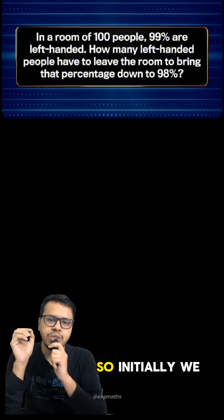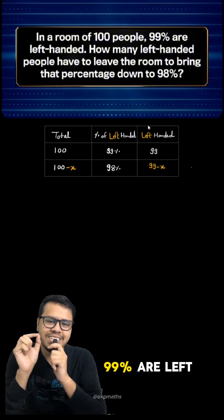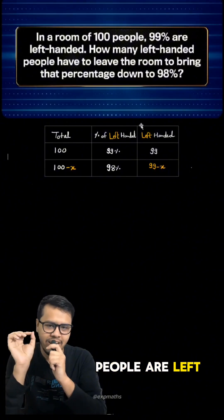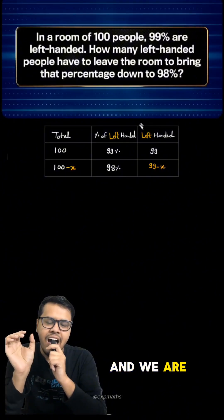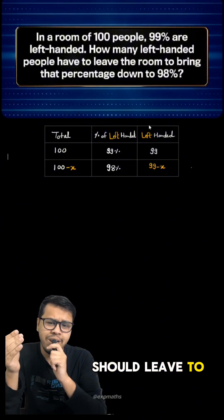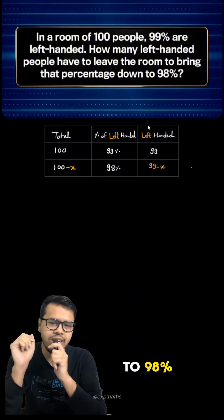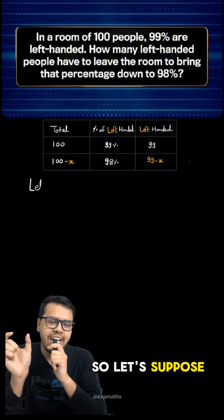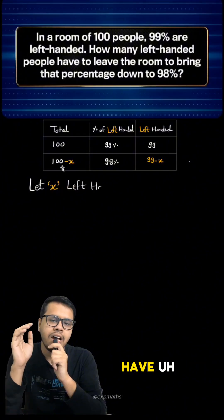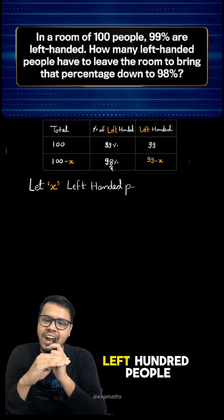Initially we have 100 people, out of which 99 percent are left-handed — that means 99 people are left-handed. We are asked how many left-handed people should leave to bring down this percentage from 99 to 98 percent. So let's suppose x left-handed people left the room.